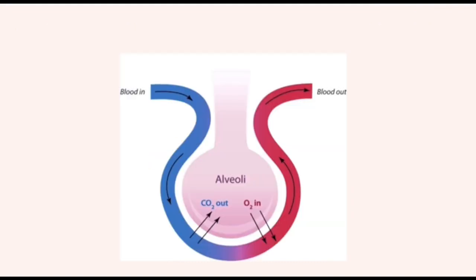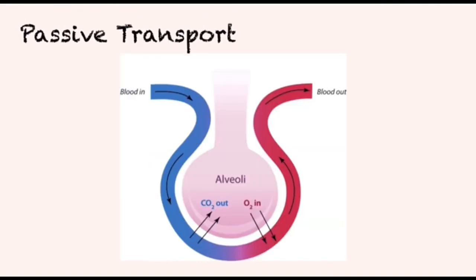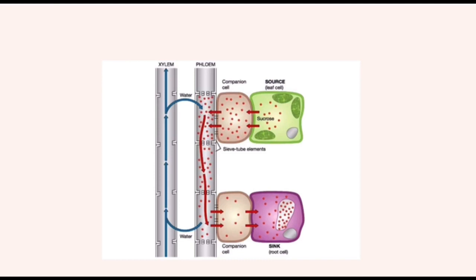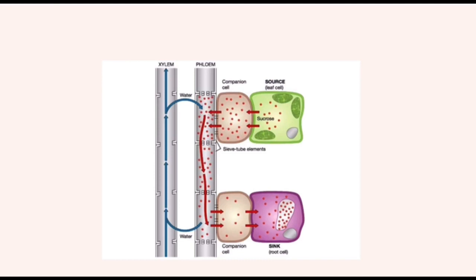Oxygen and carbon dioxide diffuse down the concentration gradient between the alveoli and blood capillaries. Since the capillaries are thin and moist, the gases are able to dissolve and diffuse easily. When transportation of sucrose occurs during translocation in plants, the mesophyll cell in the leaf synthesizes sucrose and transports it into the phloem sieve tube by active transport.